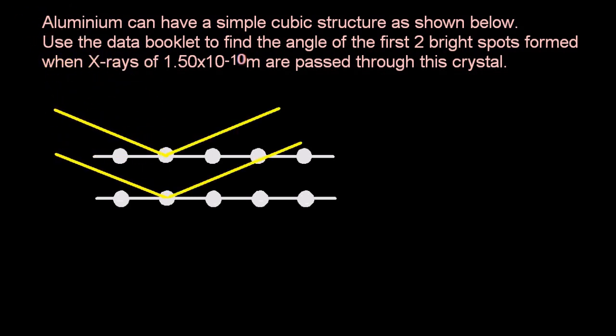So x-rays come in, x-rays go out, and we're going to use the Bragg equation, which is nλ equals 2 times d, the distance between the planes, times sin theta.